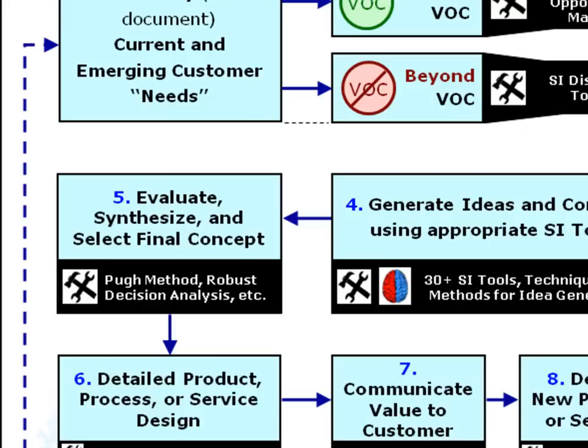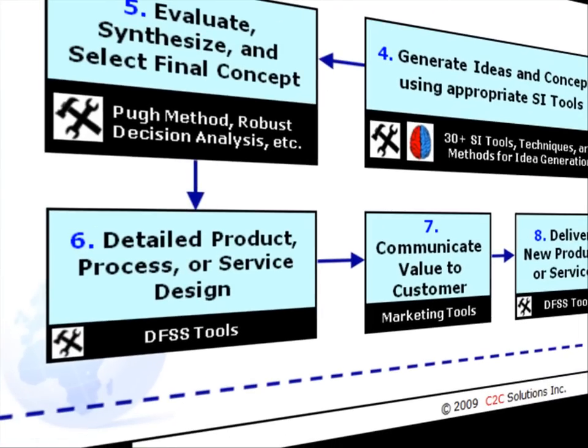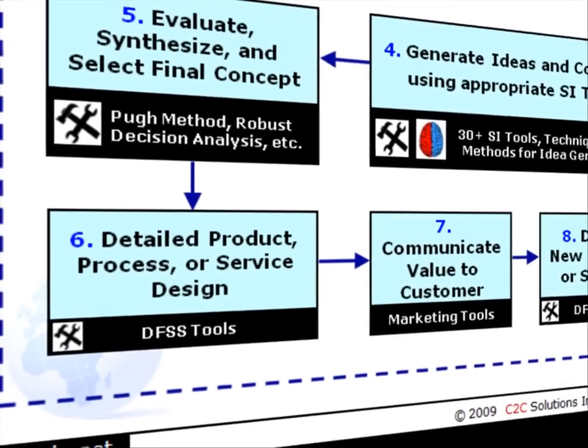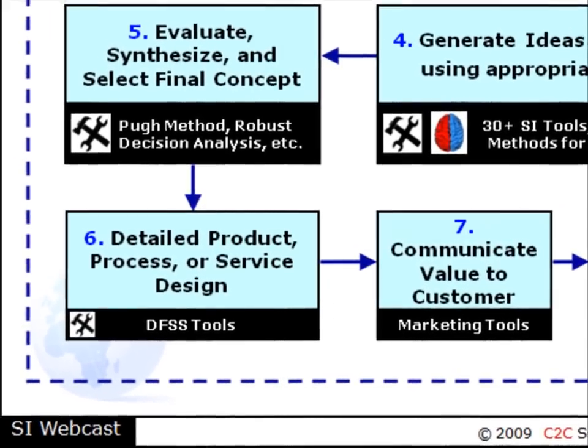This brings us to Step 6: detailed product, process, or service design. This step uses conventional engineering, product development, and design for Six Sigma best practices like FMEA, design of experiments, robust design, and so on.